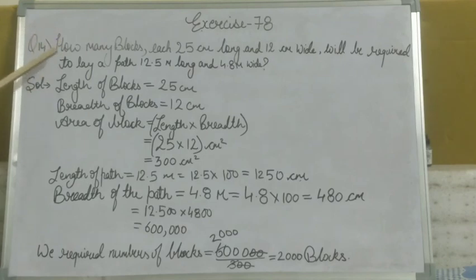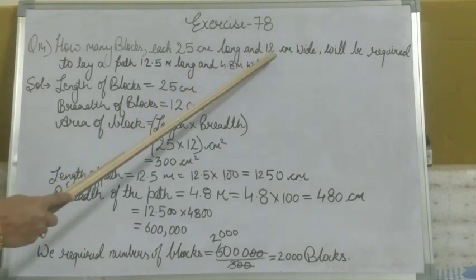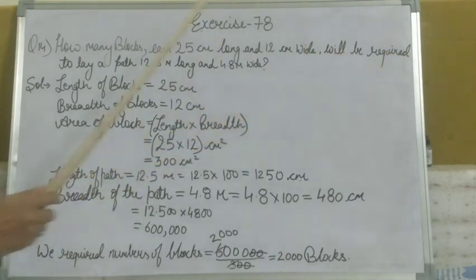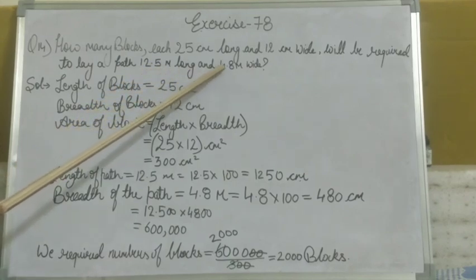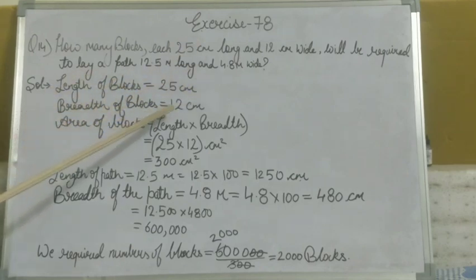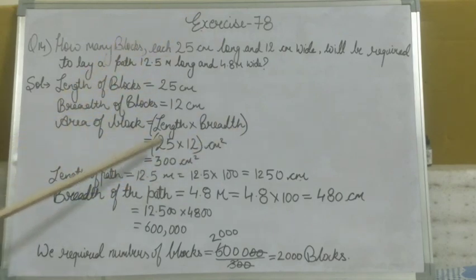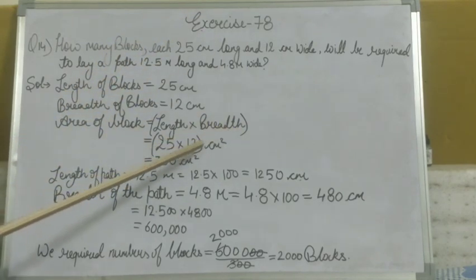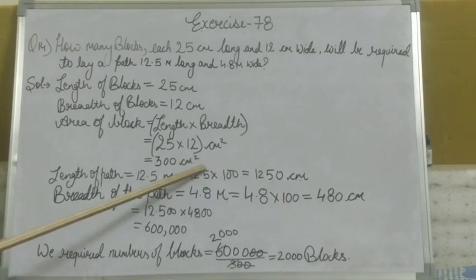Next question, question number 14: how many blocks, each 25 cm long and 12 cm wide, will be required to lay a path 12.5 m long and 4.8 m wide? Now we solve this question. The length of the block is 25 cm and breadth is 12 cm. Area of block equals length into breadth, so 25 multiplied by 12. We get 300 cm².